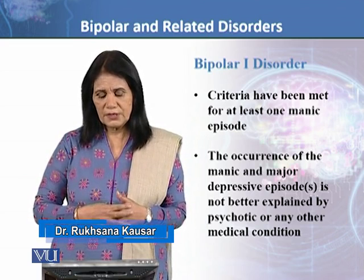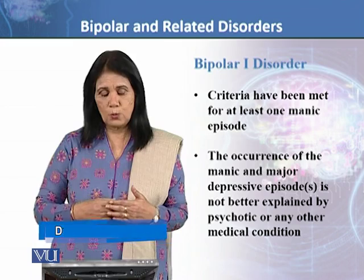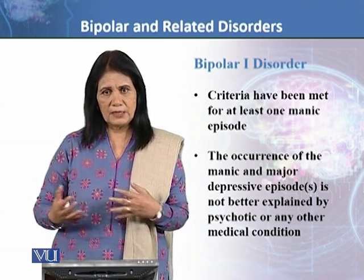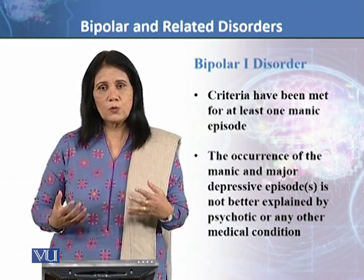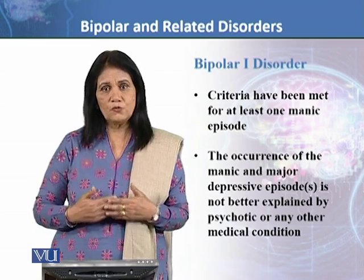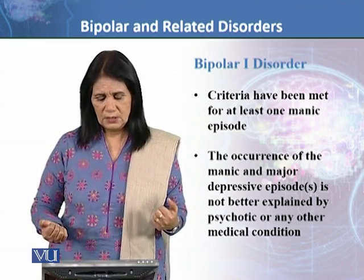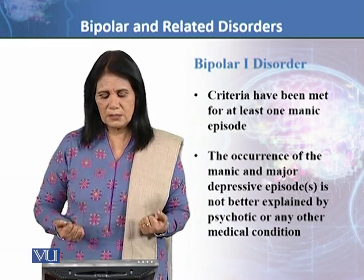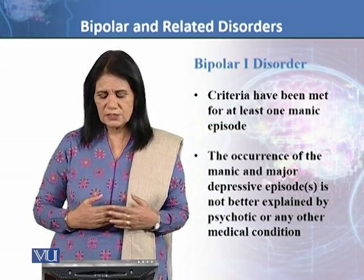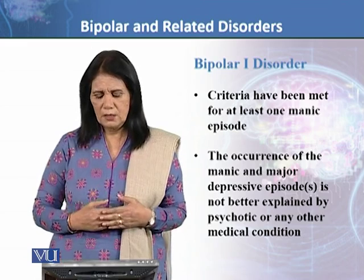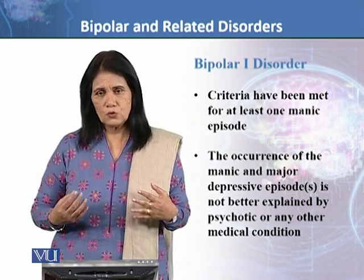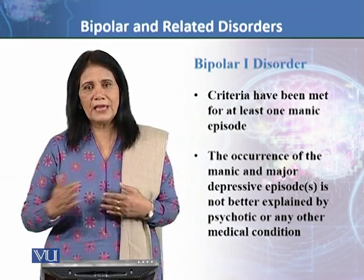The criterion for bipolar 1 is that criteria have been met for at least one manic episode. In bipolar 1, at least one full-fledged manic episode must be present. The occurrence of manic and major depressive episodes must not be better explained by a psychotic disorder or any other medical condition.